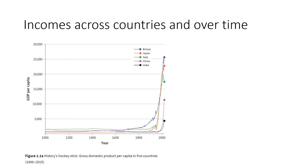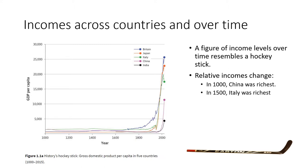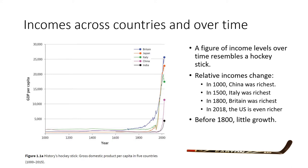And what you see is a hockey stick. Relative incomes change over time. If you go back to the year 1000, China is the richest country of these five. By 1500, Italy in green is the richest country. By 1800, Britain was the richest country. And in 2018, if the United States were on the map, we'd see the US is even richer than Britain today. But perhaps what's most striking is that before about 1800, there was little sustained economic growth in any of these countries.